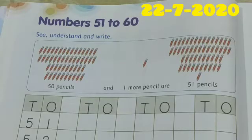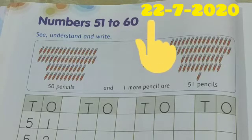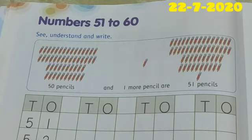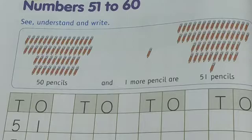Children, at first we have to write today's date on the top. So today's date is 22nd July 2020. And our topic is numbers 51 to 60. See, understand and write. Children, see there are so many pencils.